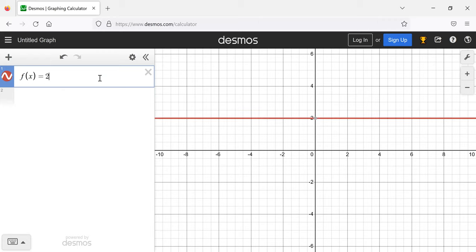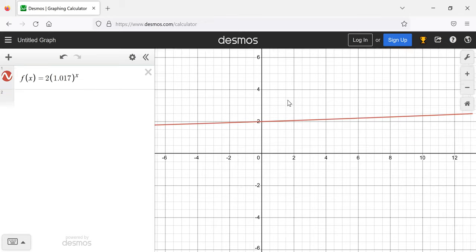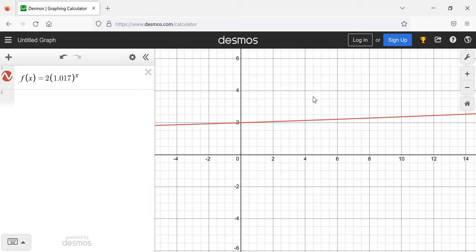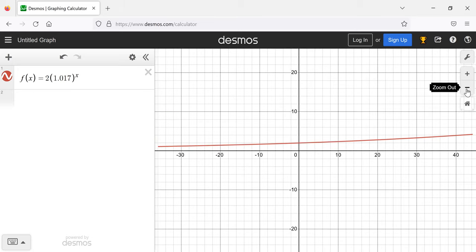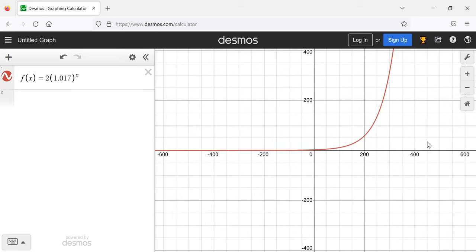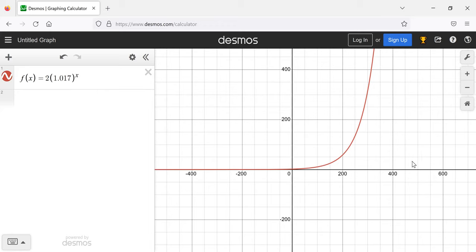So we ought to look at the graphs of continuous exponential functions too. Let's say f(x) equals 2 times 1.017 to the power of x. If we scroll out, we can get a better idea of what these graphs look like.